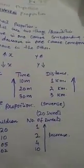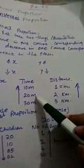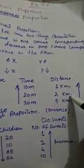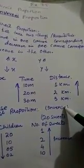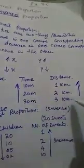For example, suppose you cover a certain distance in 10 minutes, a greater distance in 20 minutes, more in 30 minutes, and 4 kilometers in 40 minutes. Both time and distance are increasing together. This is called direct proportion.